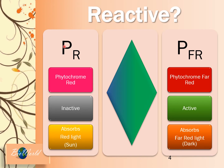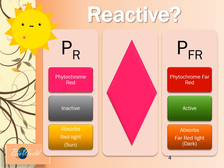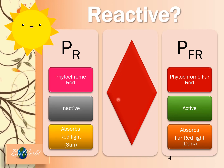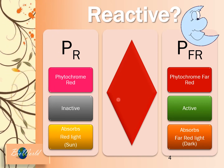Now I want to show you the interchangeable relationship between phytochrome red and phytochrome far-red. I introduced phytochrome in blue-green colour so that you can remember it is a blue-green pigment. But now I'm going to change the colour of the phytochrome to pink so that you can remember this is phytochrome red. When there is sun, phytochrome red will absorb red light from the sun and become converted into phytochrome far-red. And you see this phytochrome far-red in the dark — it can absorb far-red light and return to phytochrome red.